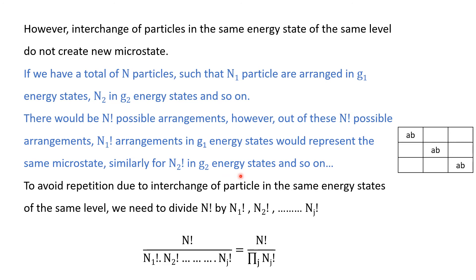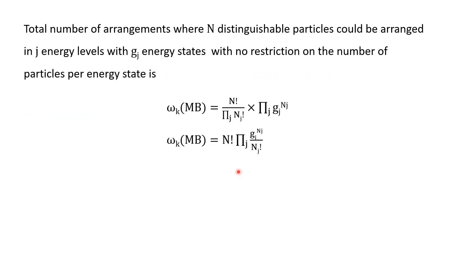Out of these N! possible arrangements, N1! arrangements in the G1 energy state would represent the same microstate; similarly N2! in G2 would represent the same microstate, and so on. For example, if I interchange A and B within the same energy state, A-B or B-A represents exactly the same microstate. So we need to avoid this repetition of sequences caused by interchanging particles within the same energy state. To avoid this repetition, we divide N! by N1! × N2! × ... × N_j!.